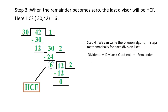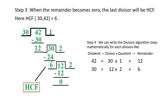We can write this division algorithm mathematically for each step using the formula: dividend = divisor × quotient + remainder. First division: 42 = 30 × 1 + 12. Second division: 30 = 12 × 2 + 6. Third division: 12 = 6 × 2 + 0. Since we got remainder 0 in the third division, and the divisor at that point is 6, the HCF of these two numbers is 6.